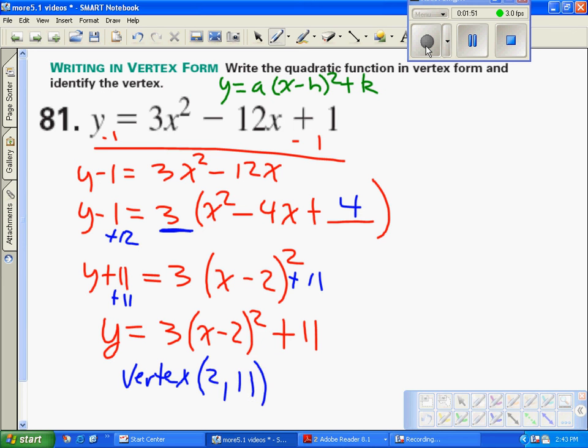The axis of symmetry is x equals 2, and from there it would be easy to graph if we need to.